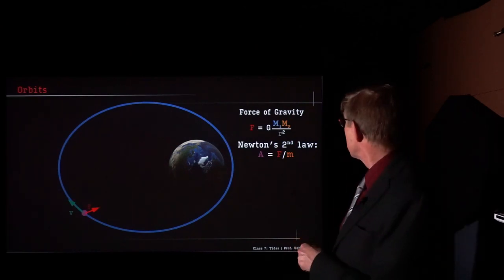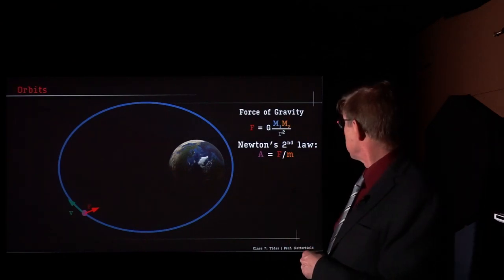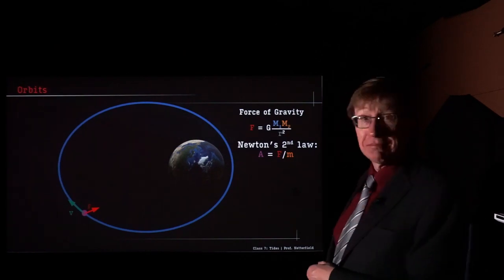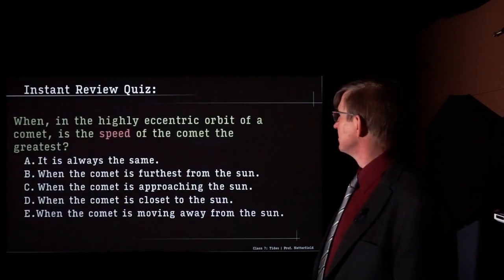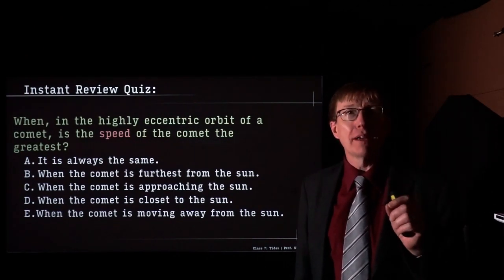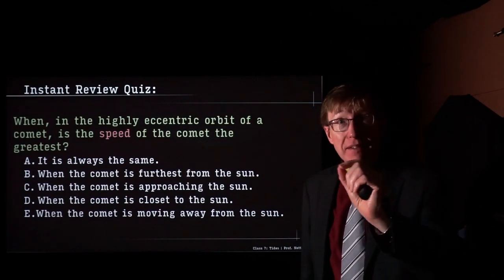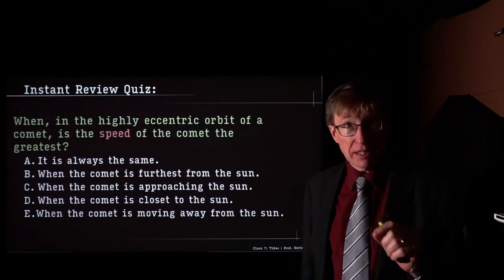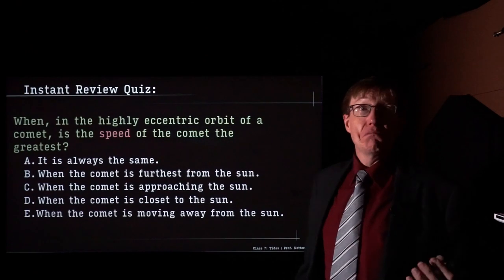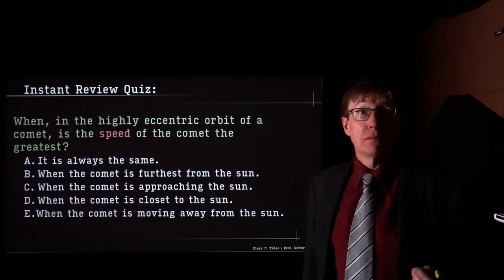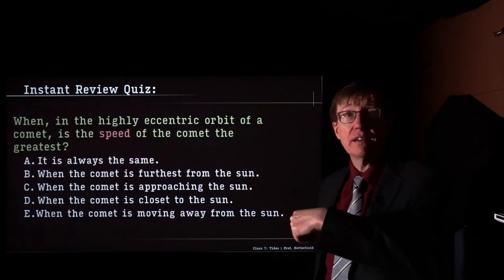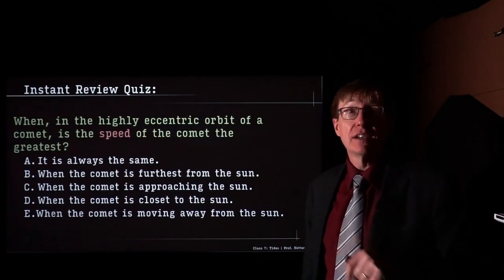Why is it an ellipse? It's a natural consequence of acceleration being proportional to the square of the distance from the mass. It's just the way it works — a natural consequence of these rules. Where did these rules come from? They came from the mind of God. Instant review quiz: in the highly eccentric orbit of a comet, when is the speed of the comet the greatest? Is it always the same, when furthest from the sun, when approaching, when closest, or when moving away?